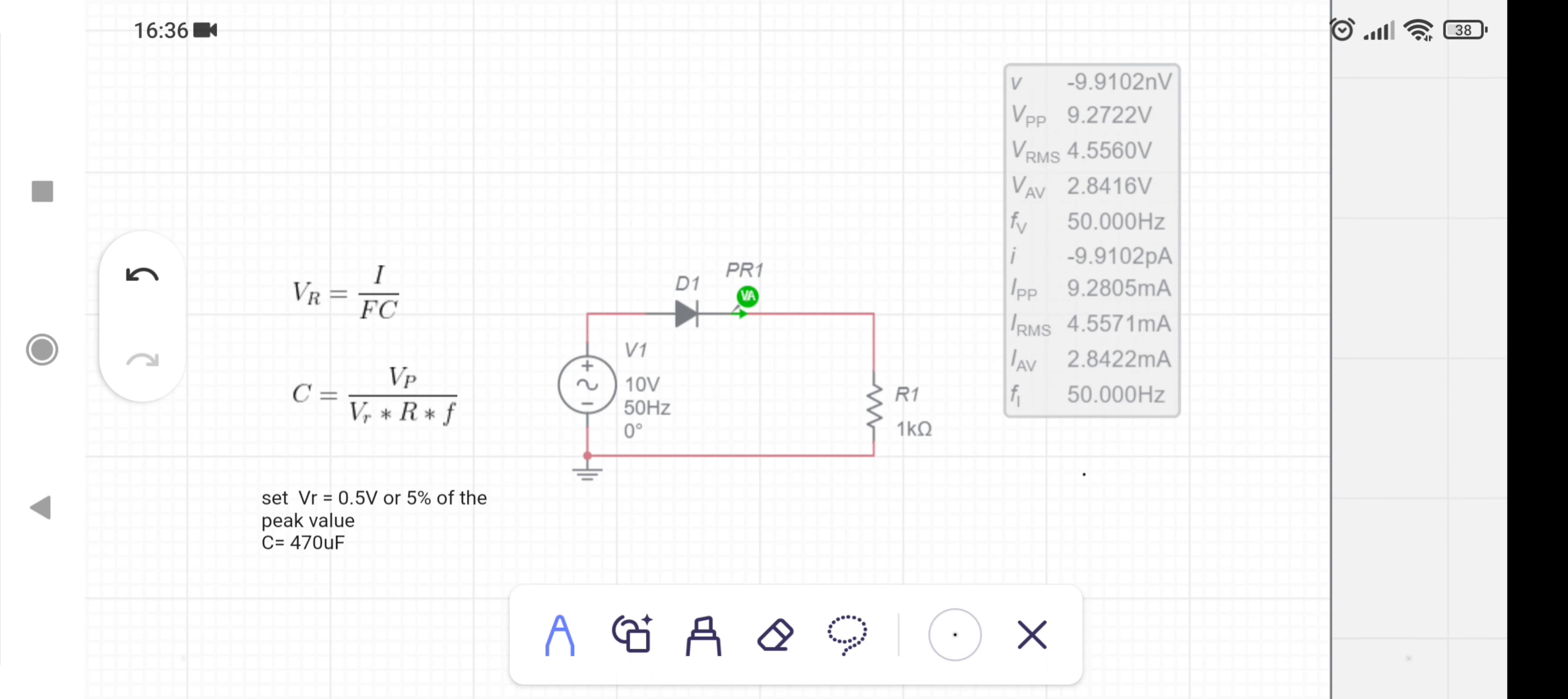Bismillahirrahmanirrahim. In this video, I am going to show you how to select a capacitor value for a half-wave diode rectifier circuit. This is voltage source V1, 10 volts peak value and 50 Hertz frequency.